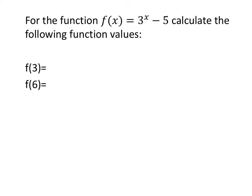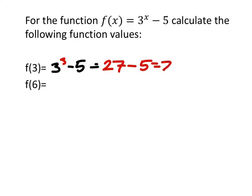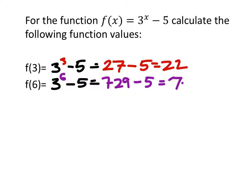For the function f of x equals 3 to the power of x minus 5, calculate these function values. So f of 3 would be 3 to the power of 3 minus 5. 3 to the power of 3 is 27, and 27 minus 5 is 22. Then f of 6 would be 3 to the power of 6 minus 5. 3 to the power of 6 on my calculator is 729, still minus 5, which is 724.